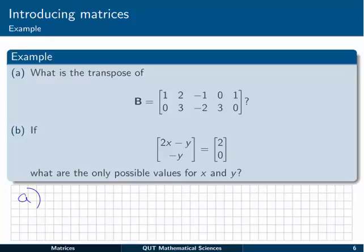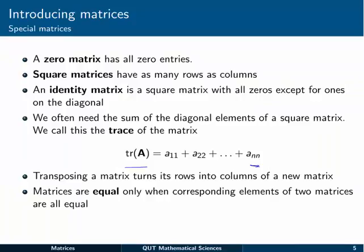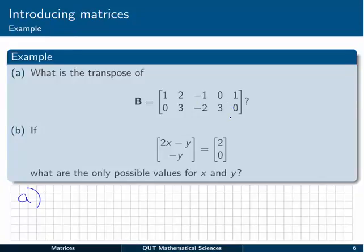Okay, when we transpose a matrix, remember that on the previous slide we learned that that means the rows become the columns of a new matrix. So B is a 2 by 5 matrix. So B transpose, which we write capital B matrix with a big T in the superscript, will be a matrix with 5 rows and 2 columns. The opposite of what B had. The first row of B will become the first column of B transpose. So we write 1, 2, minus 1, 0 and 1 in that column. The second row of B becomes the second column of B transpose. 0, 3, minus 2, 3 and 0. And that's the transpose matrix.